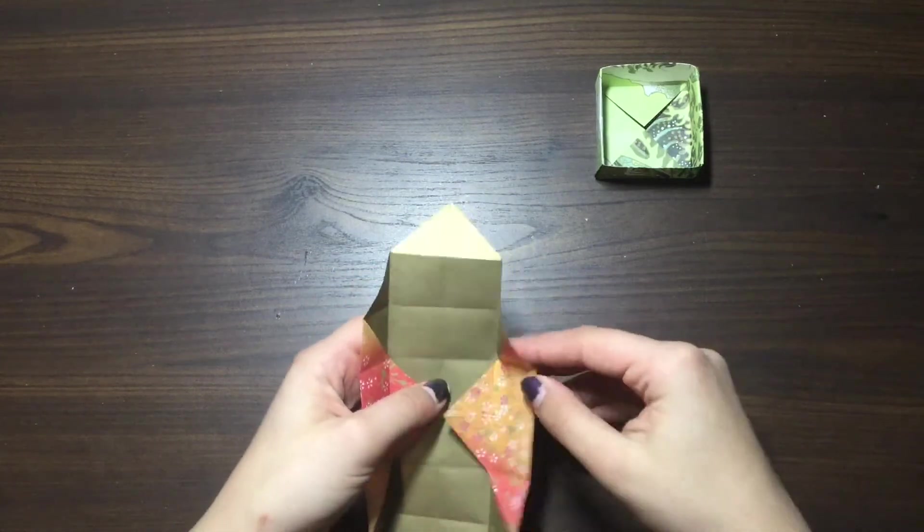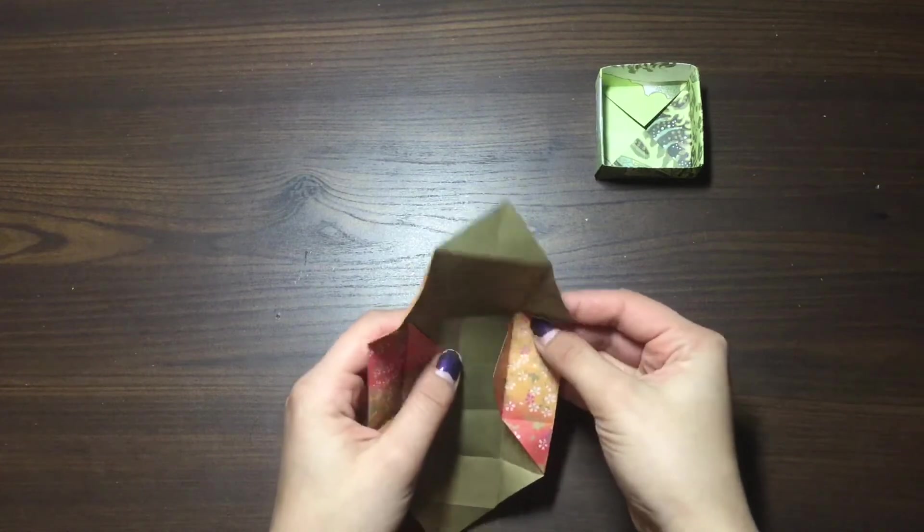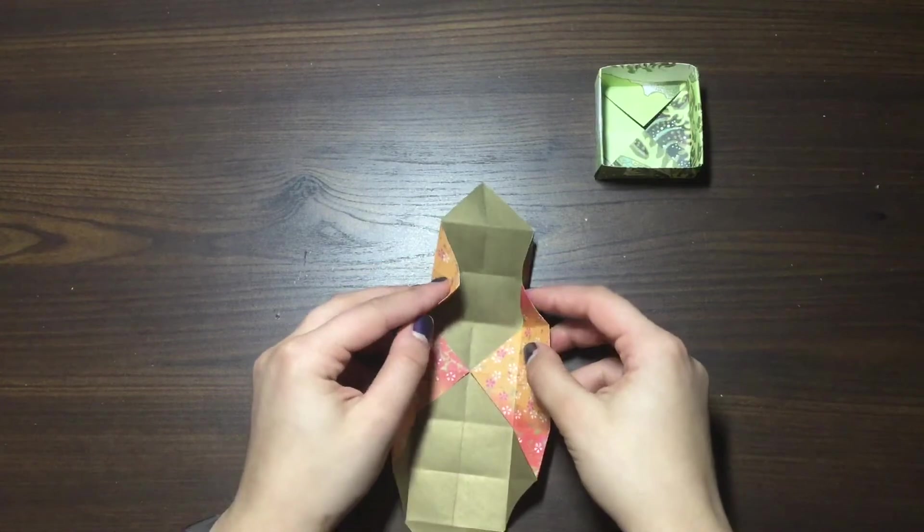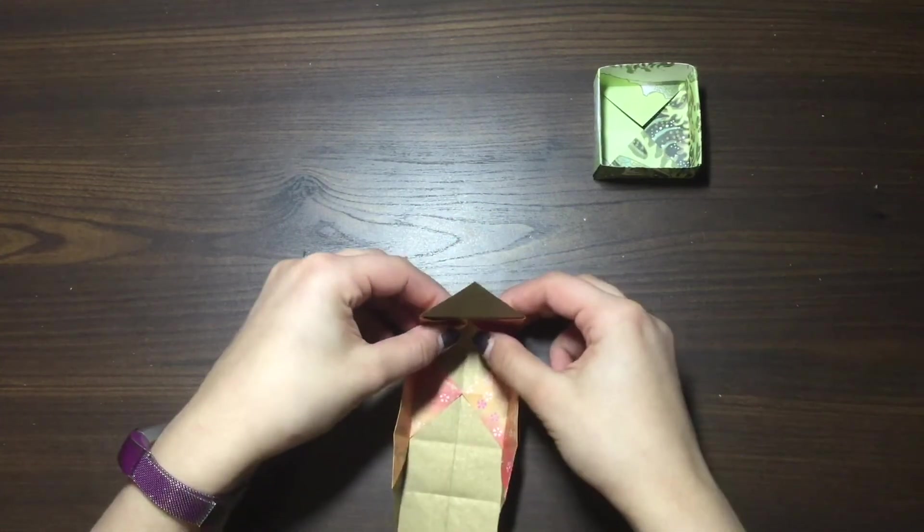And we're going to take these two folds right here, and if they're not quite prominent enough, you can fold them in like this to make sure that there's a line there, because those are going to be important. So you're going to push those in, and by doing that, it should bring this flap right up.